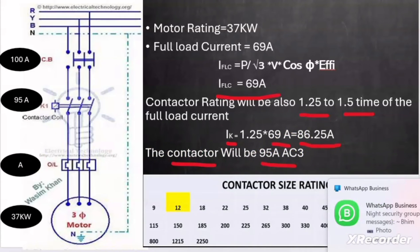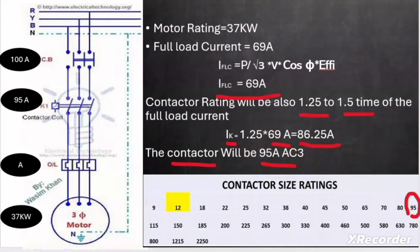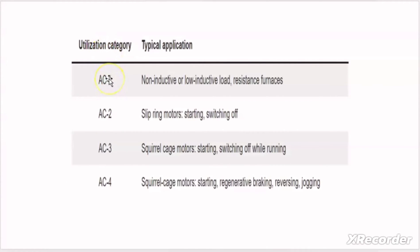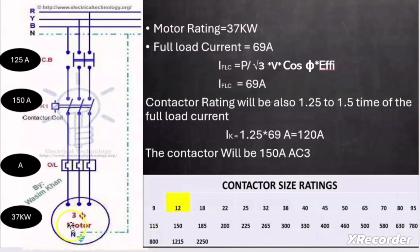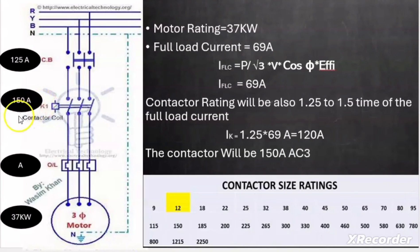The utilization category AC3 means the contactor is suited for squirrel cage motors. AC1 is used for resistive loads, AC2 for slip-ring motors, AC3 for squirrel cage motors, and AC4 for squirrel cage motors with plugging or inching operations — where the motor starts and stops very frequently, 2 to 3 times per minute. Since our motor is a squirrel cage induction motor, I selected AC3 type.